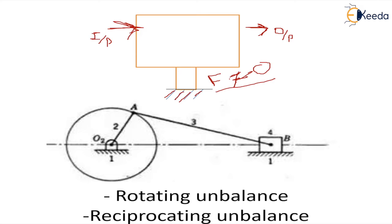So what are the possible types of unbalances that can be created? One is the rotating type of unbalance, which happens in case of rotating systems or rotating links. The unbalances in rotating links are because of the inertia forces — basically the centrifugal force acting outwards — which keeps changing because the direction is always changing. So this force is dynamic in nature, and it is not good for the frame to have any imbalance because of the rotating parts.